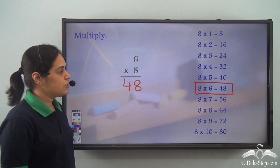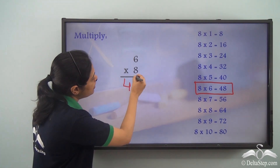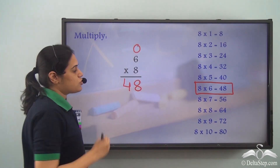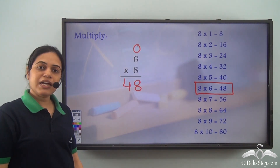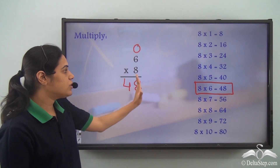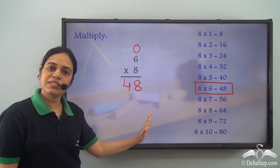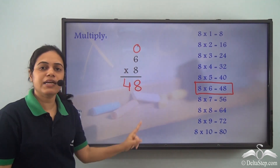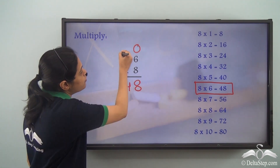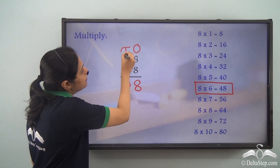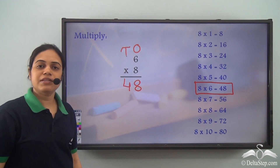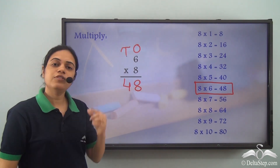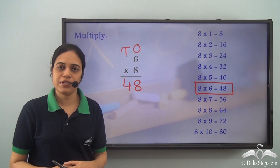Remember, 8 is in the ones place, so I write 8 below the ones place digits — that is below 6 and 8. And 4 is in the tens place, so I write 4 to the left of 8.